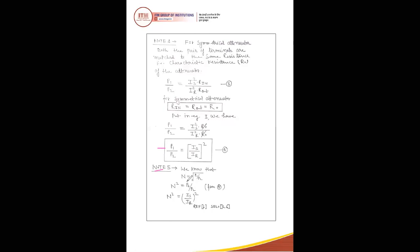Note point number five: as we know, for convenience n = √(P1/P2), so n² = P1/P2. From equation four, P1/P2 = (Is/Ir)², so n² = (Is/Ir)².